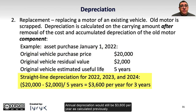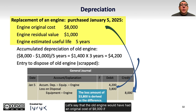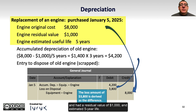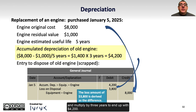Annual depreciation would still be $3,600 per year as calculated previously. Now let's assume that we depreciate the vehicle for three years to 2024 prior to an engine replacement on January 5, 2025. Let's say that the old engine would have had an original cost of $8,000 if purchased separately at the time the vehicle was purchased, and had a residual value of $1,000 and estimated five-year life. We would determine the accumulated depreciation of the old engine as $8,000 cost less $1,000 residual value, divided by 5 years, or $1,400 per year, multiplied by 3 years, to end up with $4,200.